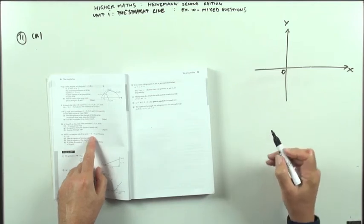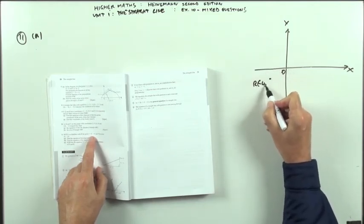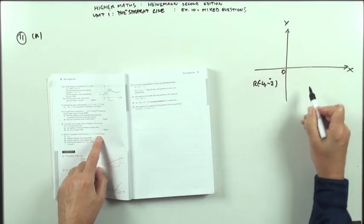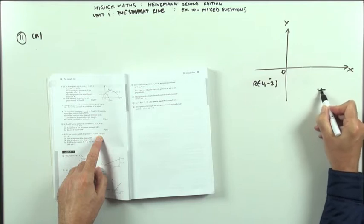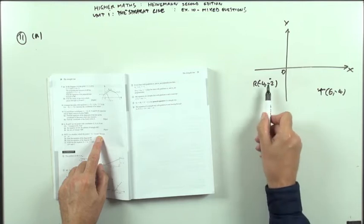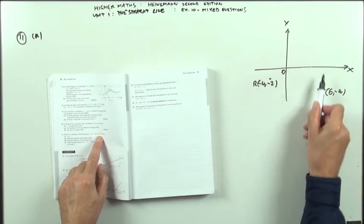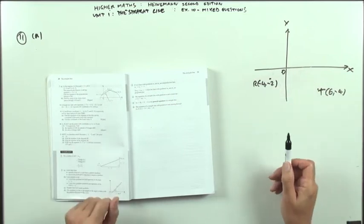R being the point negative 4, negative 2, put that in, roughly negative 4, negative 2, would be about there. T being the point 6, negative 4, so T being the point 6, negative 4. Not sure which sense they've named it in, if it's R, S, T, U, or R, S, T, U. Normally you would name them anti-clockwise, but I'm not sure in this case.